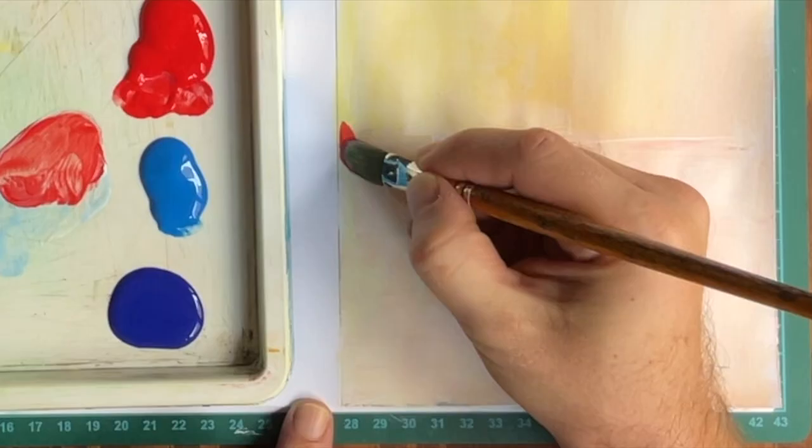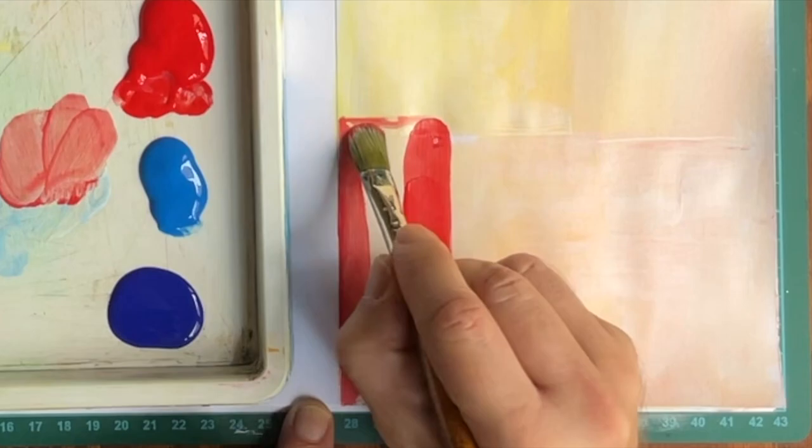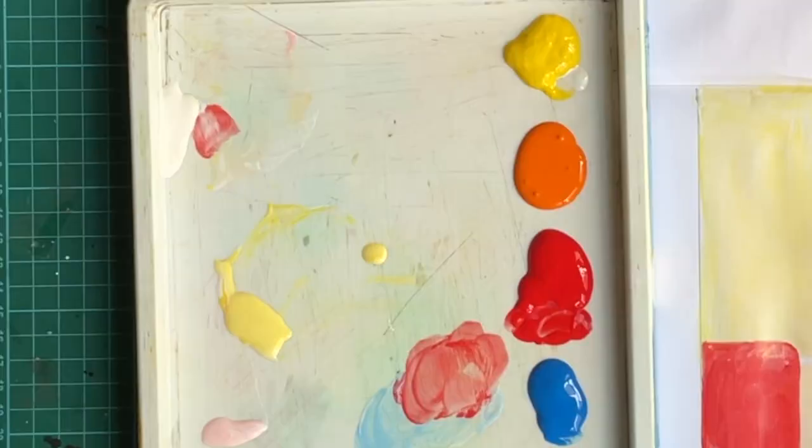Next, make some pink. We'll paint a rectangle in the bottom right. To paint a straight line, I load my brush with paint and apply pressure with the brush, so the bristles bend. This pressure helps create a crisp edge.